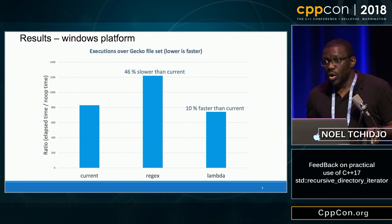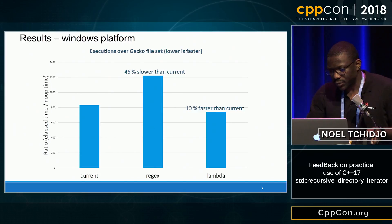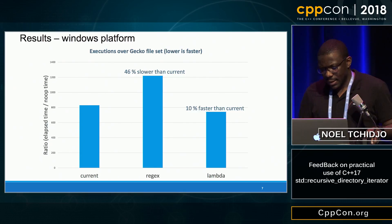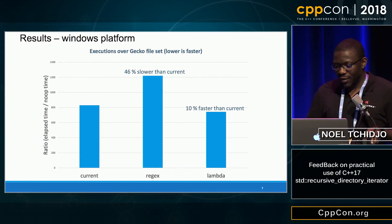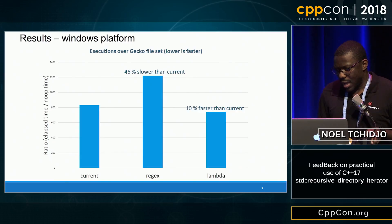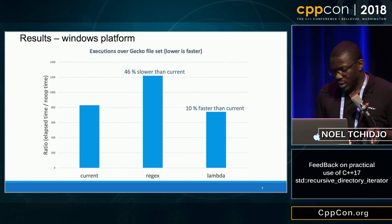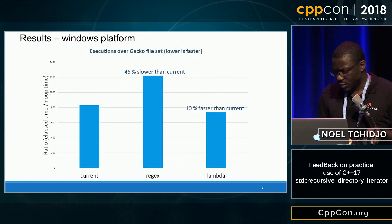Another result on Windows platform, again running over the Gecko file set: we have the regex version 46% slower than the current version, and the lambda version 10% faster. The regex version being slower was due to the regex implementation of Visual Studio.